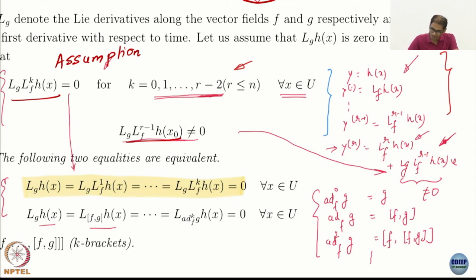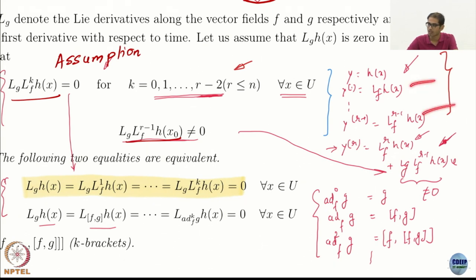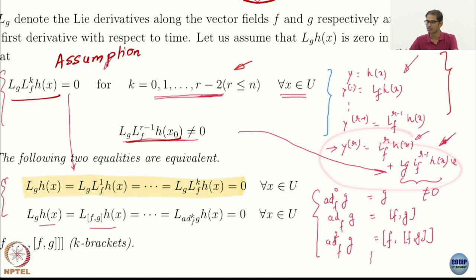The question is what happens to the rest of the state equations — are those linear or not? That is not yet clear. But what we can say is this piece, the r-dimensional subsystem, becomes linear. At least that much we can say for sure.